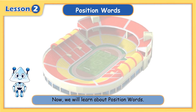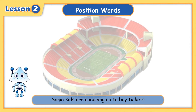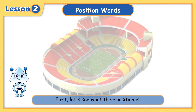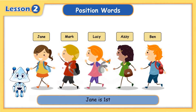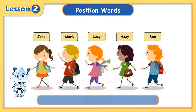Now we will learn about position words. Some kids are queuing up to buy tickets to watch their friends compete in the competition. First, let's see what their position is. Jane is first, Mark is second, Lucy is third, Ozzy is fourth, Ben is fifth.